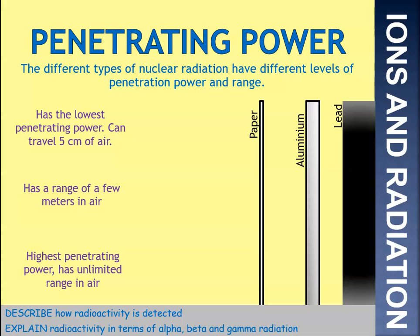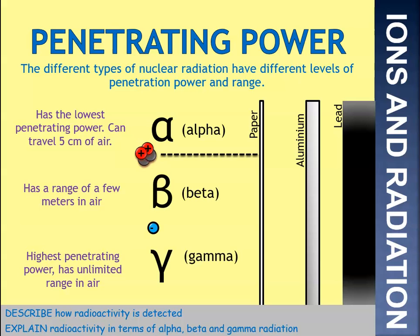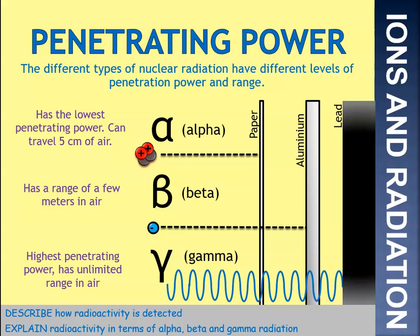Different types of nuclear radiation have different levels of penetration power and range. Alpha has the lowest penetrating power — it can travel through 5 centimetres of air and is stopped by a bit of paper. Beta has a range of a few metres in air and is stopped by a thin sheet of aluminium. Gamma has the highest penetrating power — it has an unlimited range in air and is stopped by a really, really thick amount of lead. Pause the video and get those details down.